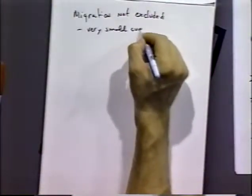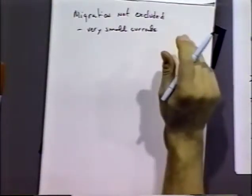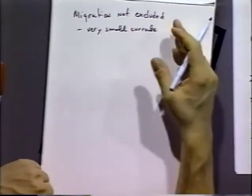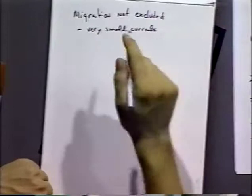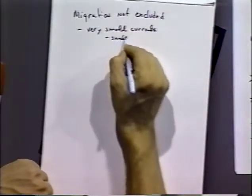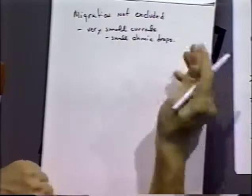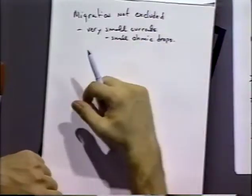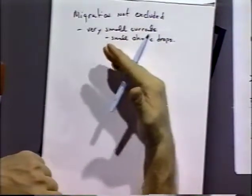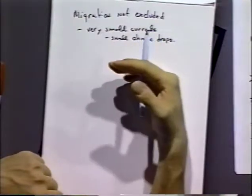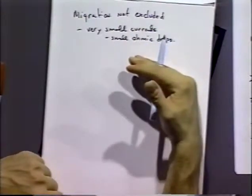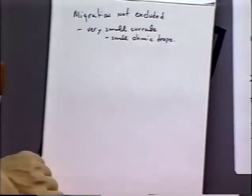However, migration is not excluded under certain conditions where we have very small currents. In that case, the currents are small enough that the voltage drop due to the solution resistance is very small. So we have small ohmic drops. And that means that we can actually avoid having the supporting electrolyte in the system. That has the advantage is that we don't have to introduce impurities, and that can often be an advantage for analysis where we don't have to add anything specifically, and that can avoid impurities and making the analysis a little bit more sensitive.